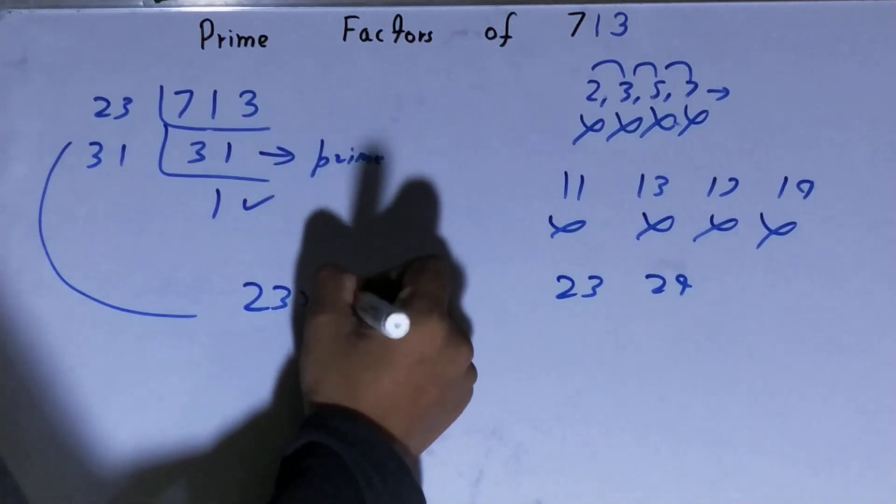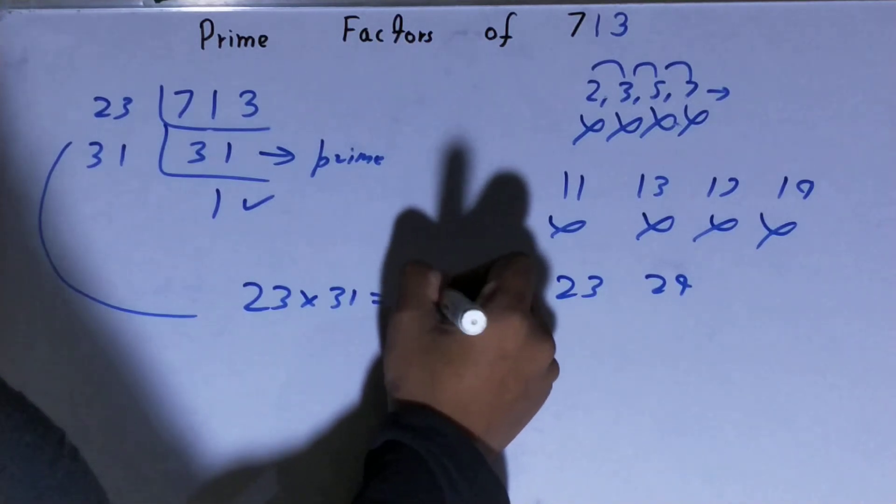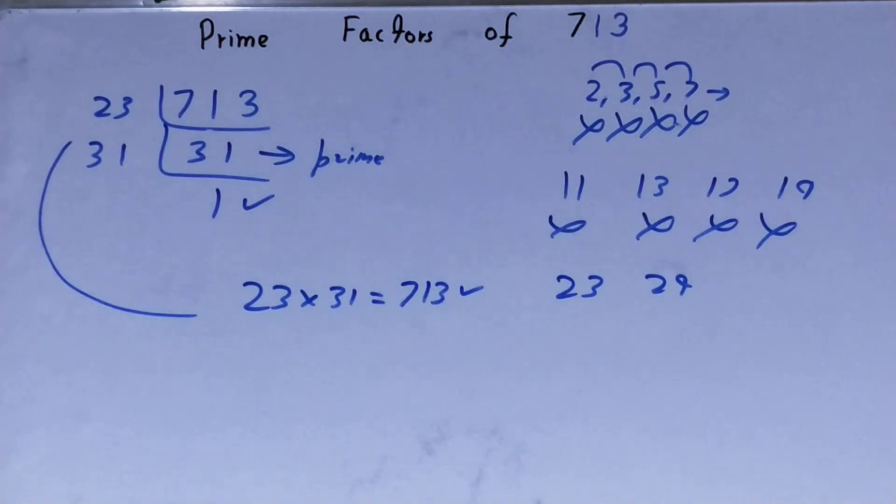Now if you want to check whether it is right or not, you can multiply it, and if on multiplying you get the number back again, that means your calculation is correct. If not, you need to recheck.